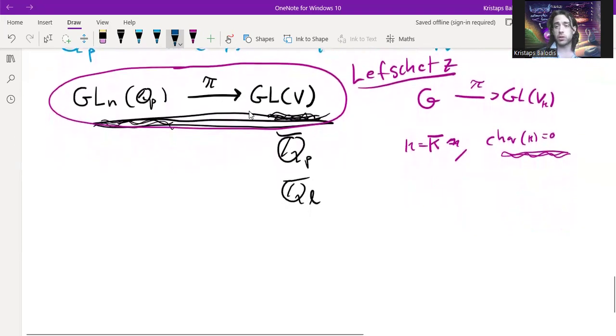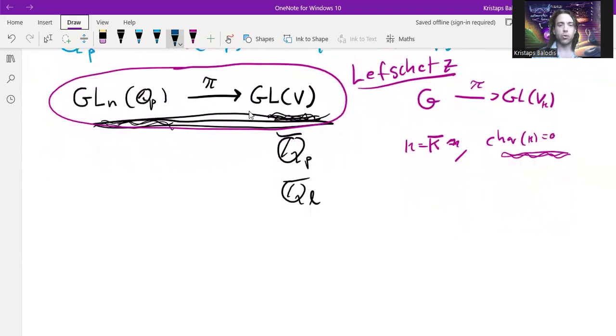Things get weird here. As I understand it, if we take the case of Q_l bar where l is not equal to p, then things are pretty well understood. Things behave well largely just because these topologies are not very comparable.